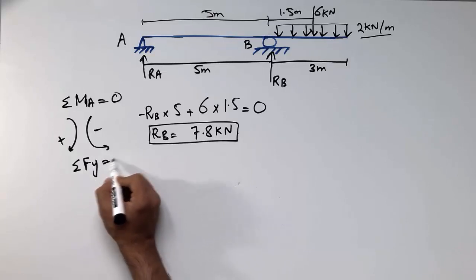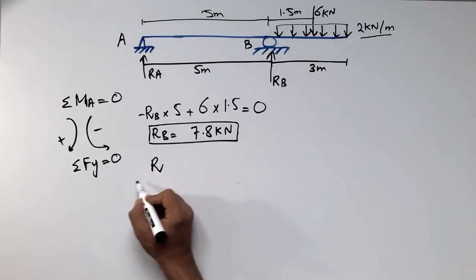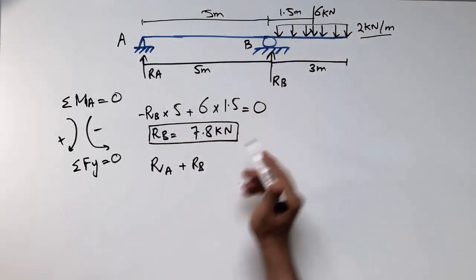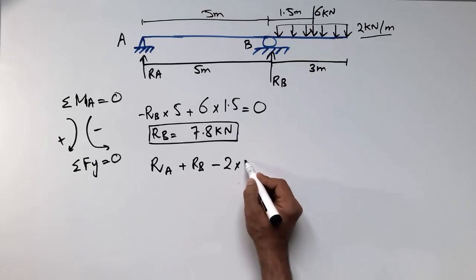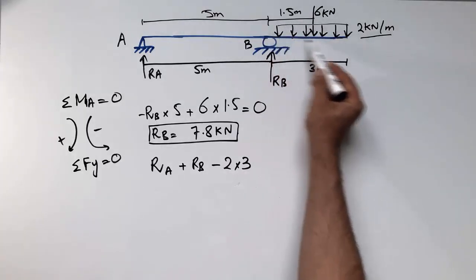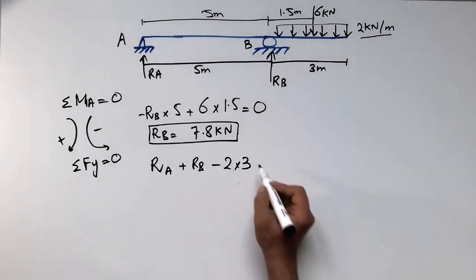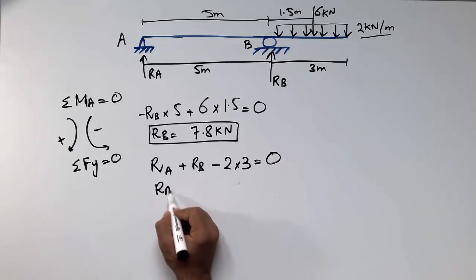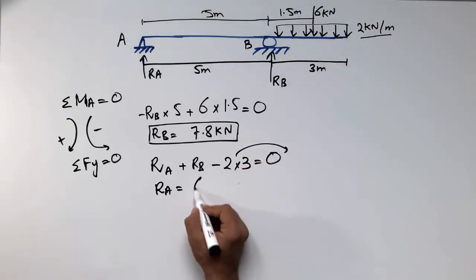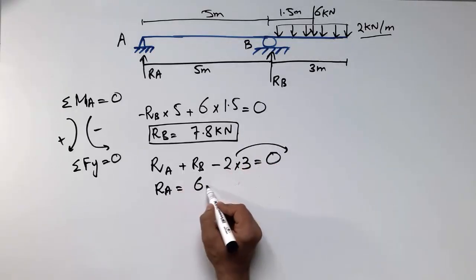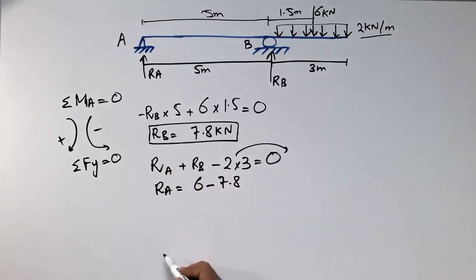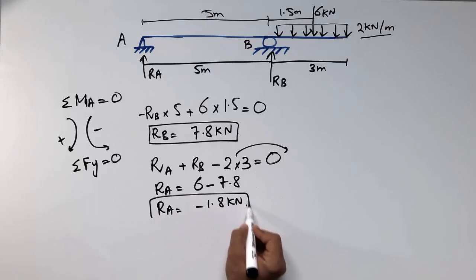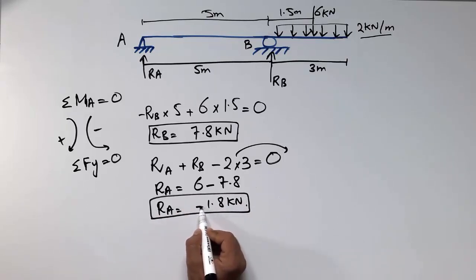To find RA, we use the summation of vertical forces equal to zero. RA and RB act upward (positive) and the total distributed load acts downward: 2 × 3 = 6 kN. Substituting RB = 7.8 kN: RA = 6 − 7.8 = −1.8 kN.